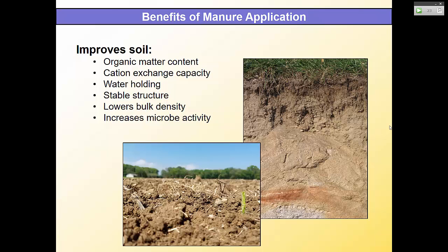Adding manure improves soil organic matter — it's not just the nutrients. Organic matter has the highest cation exchange capacity of anything in the soil — more than clay, sand, or silt — so it adds the most CEC, the ability to hold nutrients. It also improves water holding and can stabilize soil structure.